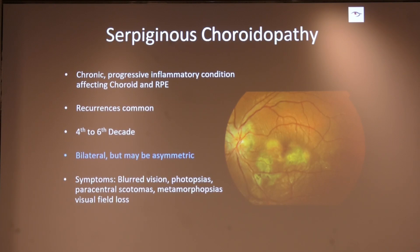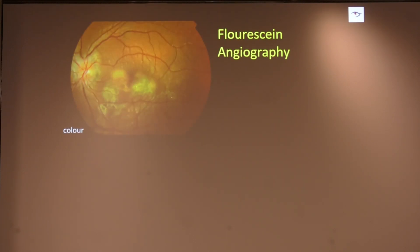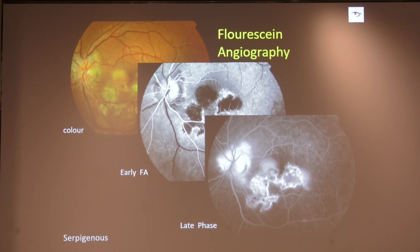Serpiginous choroiditis presents as larger lesions, bilateral but possibly asymmetric, with very common recurrences. Typically you find grayish-white lesions with serpiginous or geographic-like extensions in the posterior fundus, mostly near the peripapillary area. Active lesions are at the edge of atrophic scars. CNV may occur and treatment responses can be poor. On fluorescein angiography, early-phase hyperfluorescence is seen at the lesion margins, with leakage visible in late phases.